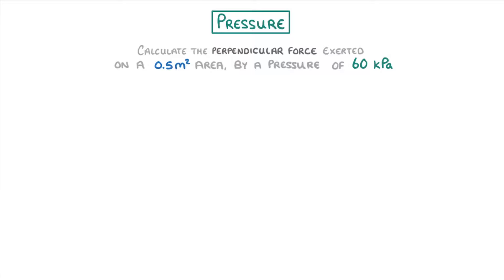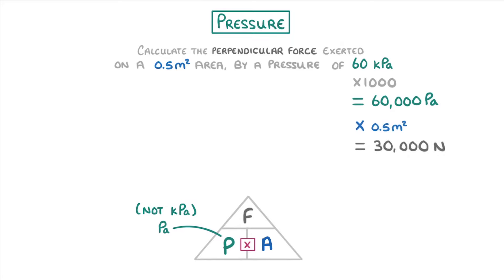If we turn our equation into a formula triangle, we can see that in order to get force we need to multiply pressure by area. Pressure is measured in pascals though, not kilopascals, so we first have to multiply these 60 kilopascals by 1,000 to get 60,000 pascals, which we can then multiply by our area of 0.5 meters squared to get 30,000 newtons or 30 kilonewtons, which would be our final answer.